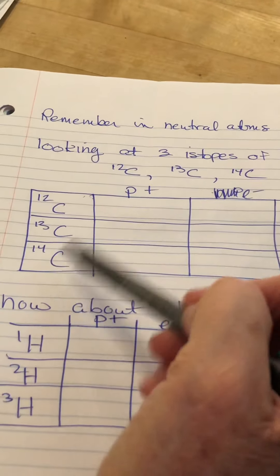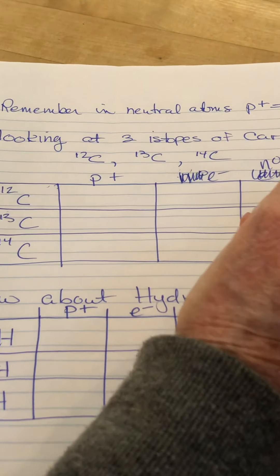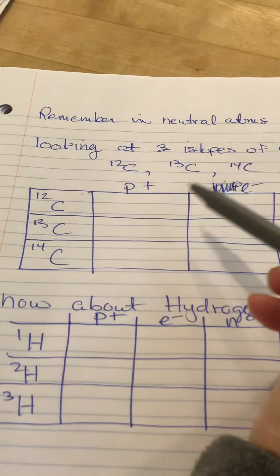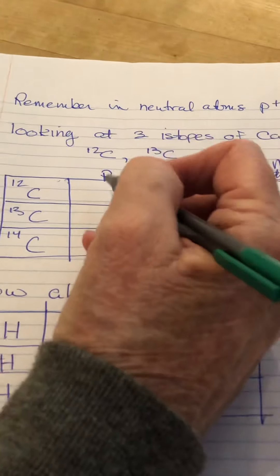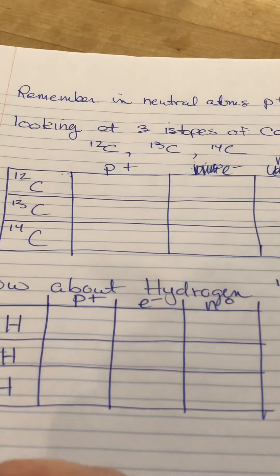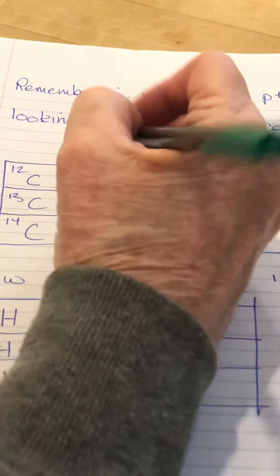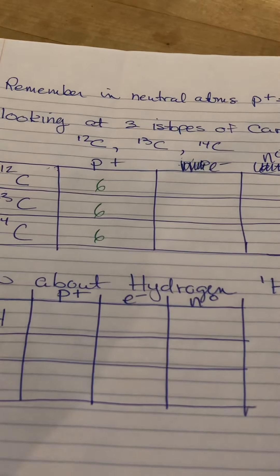Here are the isotopes of carbon, protons. This is supposed to be electrons. Here, I messed it up the first time, and neutrons. We know that for a neutral atom, protons and electrons have to be the same. And I know the protons on all of these carbons are 6 because I've just looked it up on the periodic table, and I've been boring you with it for the last 10 minutes. So, 6, 6, and 6. That was so hard.